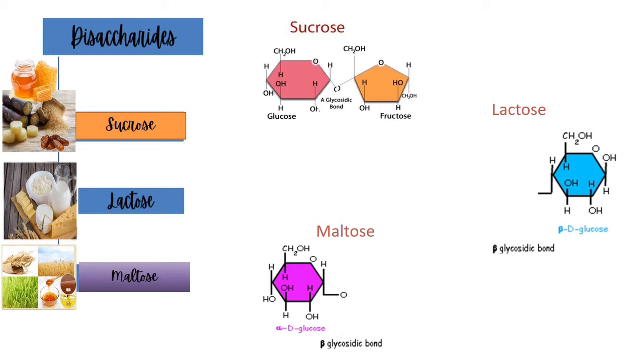Lactose is made from monomeric glucose combined with galactose. Galactose and glucose are held together by a beta glycosidic bond. Common sources of lactose at the left are from animal sources such as cheese, milk, and other dairy products.